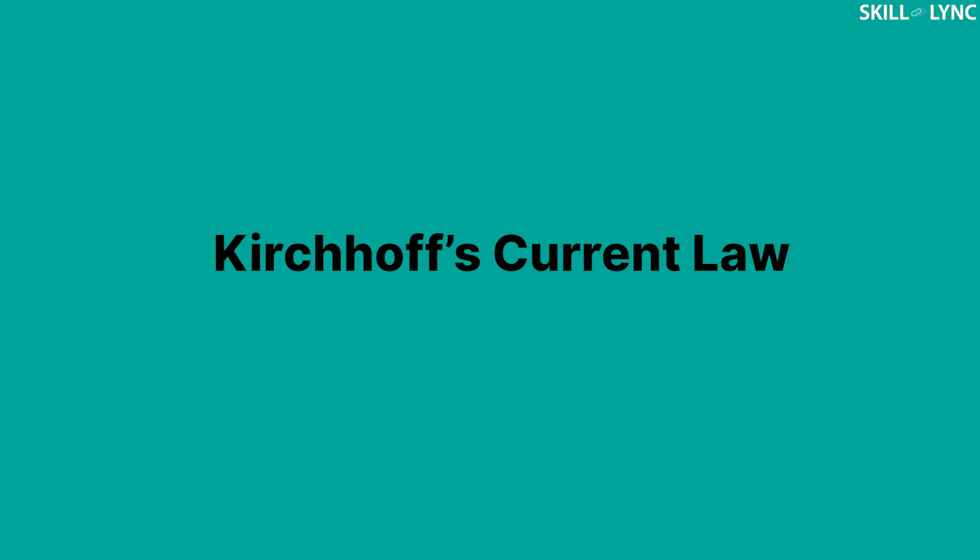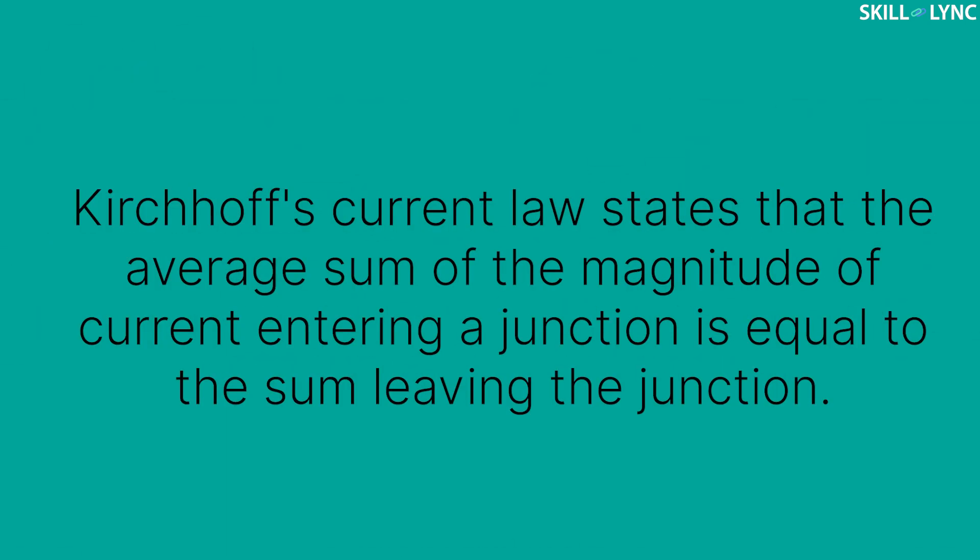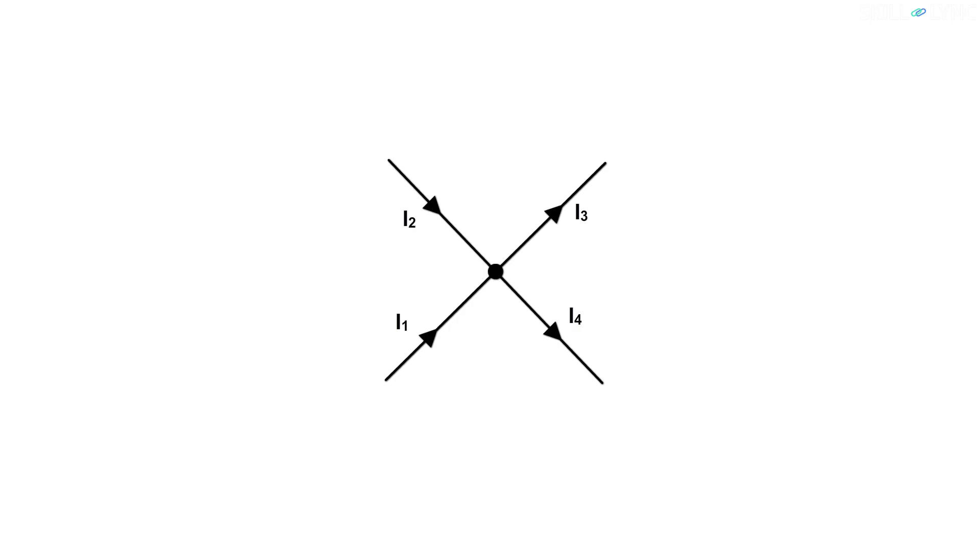First, let us look into Kirchhoff's current law. Kirchhoff's current law states that the sum of the magnitude of current entering a junction is equal to the sum of currents leaving the junction. We will understand this with the help of this image here. There is a junction in the image where all these currents pass through. A junction is a point where three or more points join.